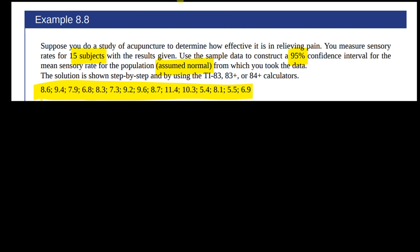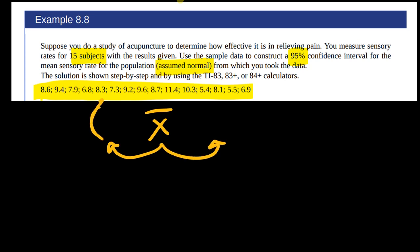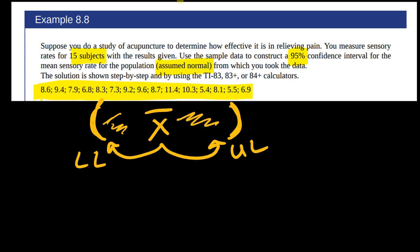We're going to be doing this in Excel, though the textbook also shows how to do it with different calculators. The basic idea is: I have this data and first I want to figure out the sample mean. Then once I have the sample mean, I'm basically going to find some sort of buffer zone around that sample mean — a lower limit and upper limit — where we're 95% confident that the population mean is somewhere in that interval.